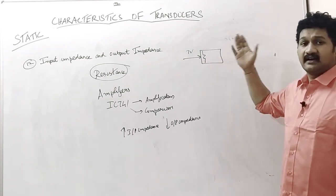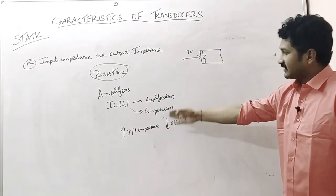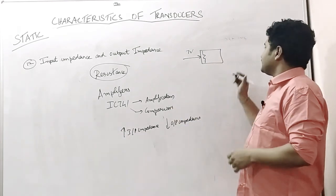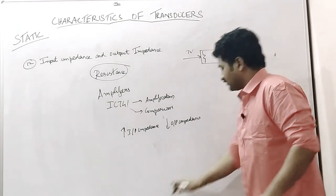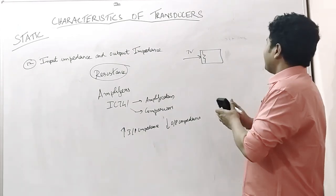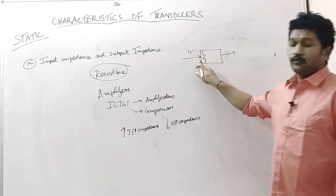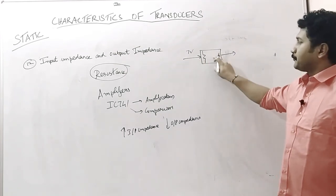That is the reason why the input impedance is high for an amplifier. This amplifier's output impedance will be very low or zero. Why should it be zero? After processing the input, acquiring the input, and processing the input, the output should be supplied in the fullest format.